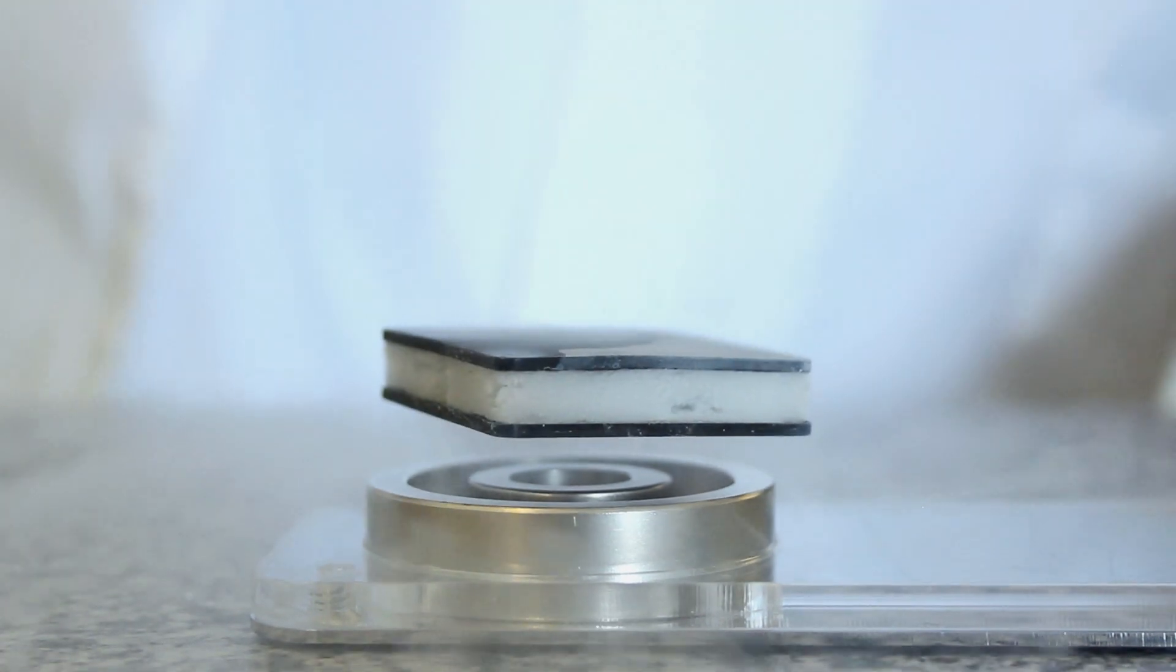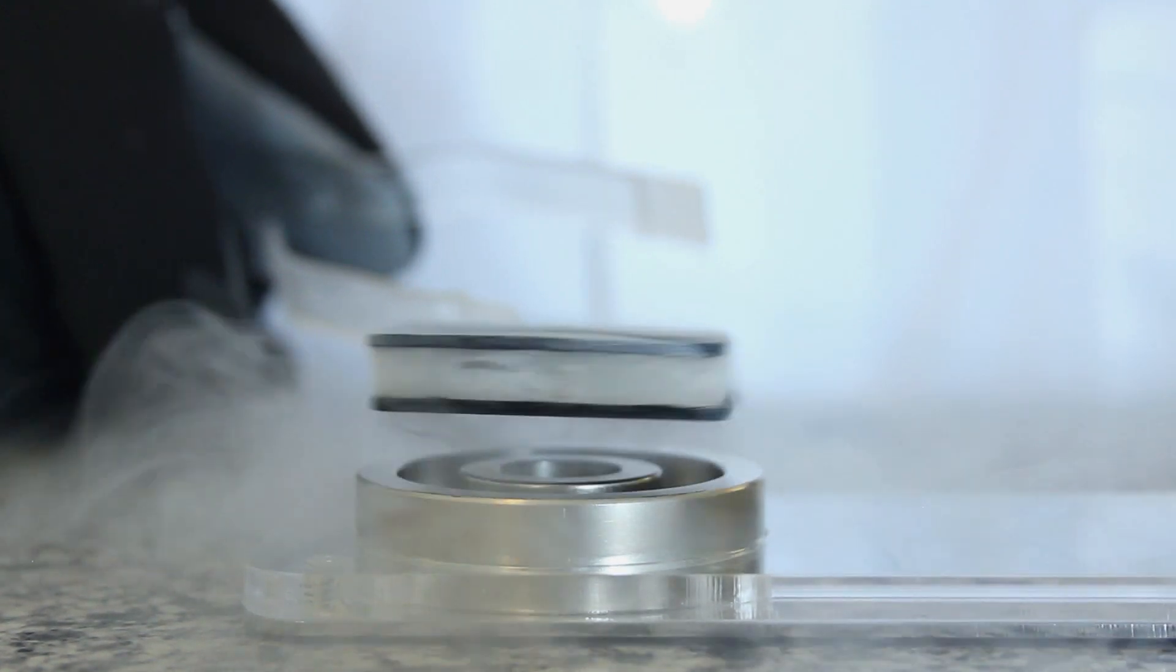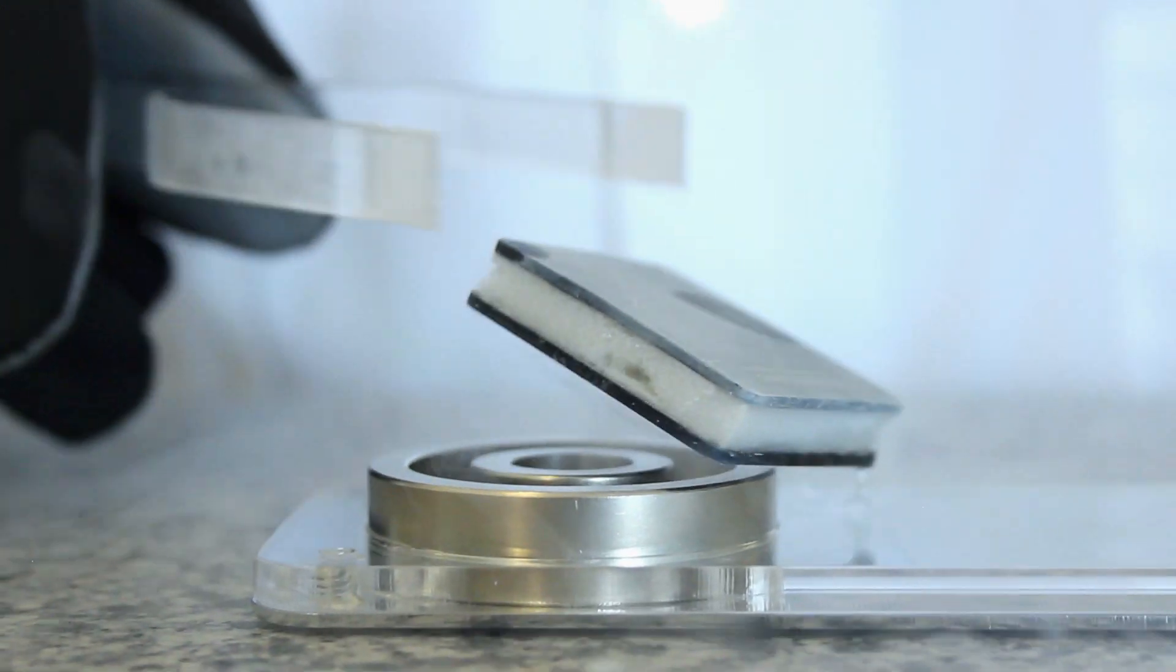If we place the levitator into a cylindrical magnetic field it will rotate following the magnetic field without friction. The levitator can be repositioned within this magnetic field. When it's repositioned it'll continue to rotate without friction.